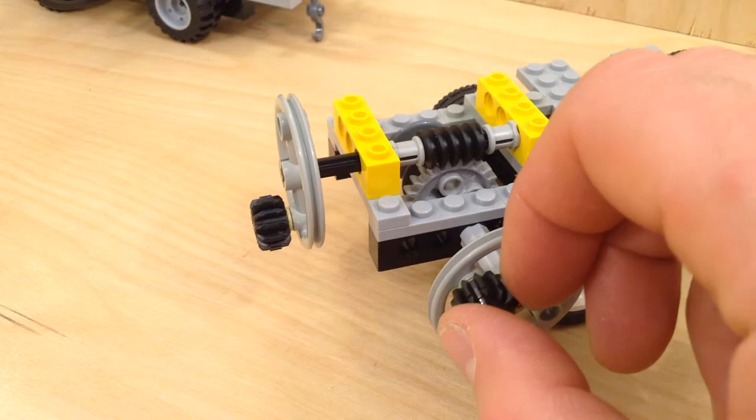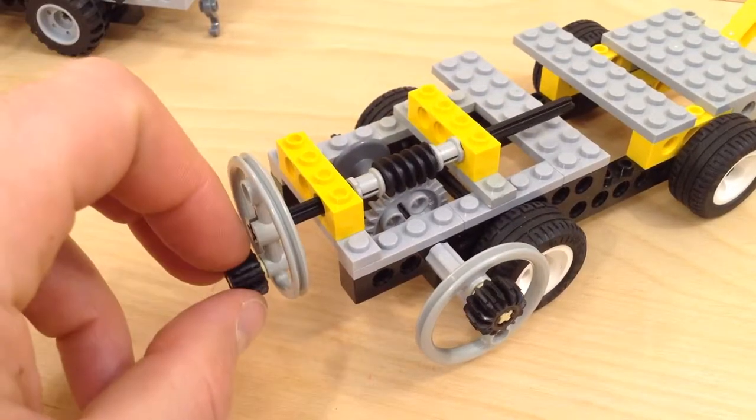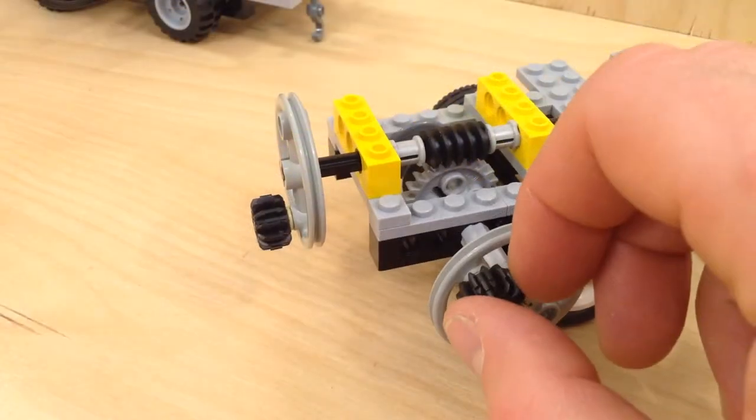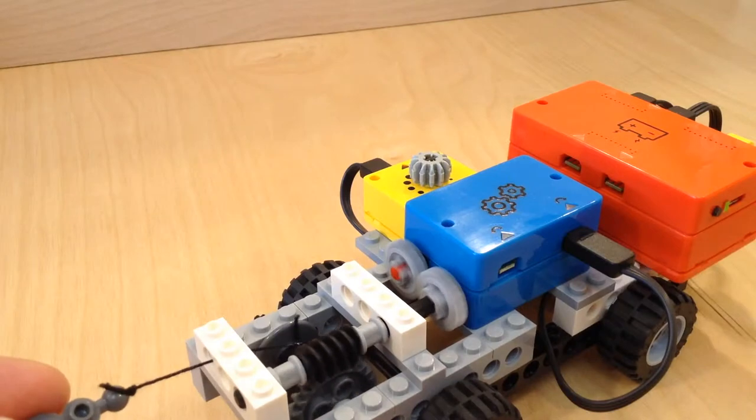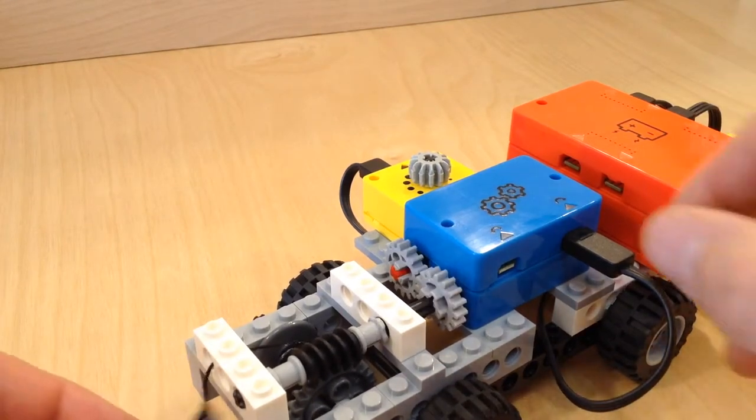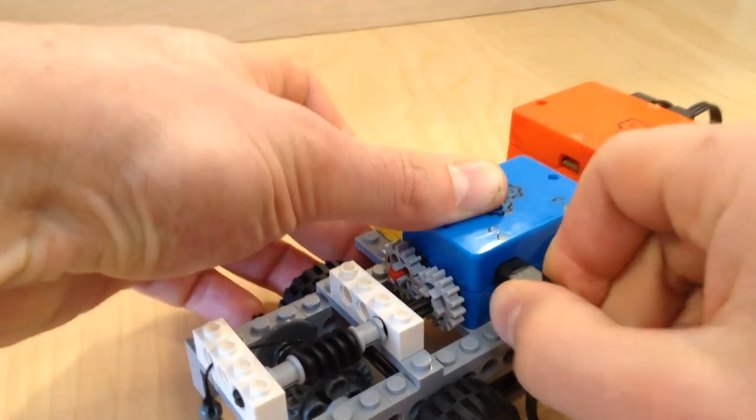Second, worm gears are not back drivable, meaning you can turn the worm gear to drive a round gear, but you can't turn the round gear to drive a worm gear. This is why you can't just pull the string out. You have to switch the connector and drive the motor in reverse to reel the string out.